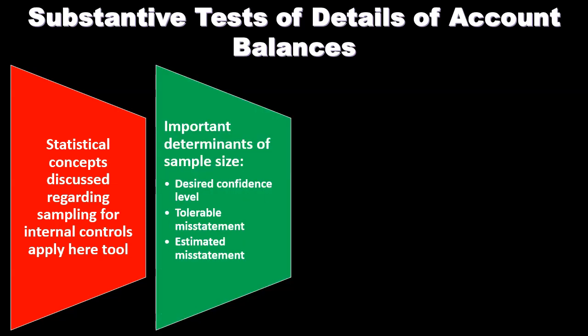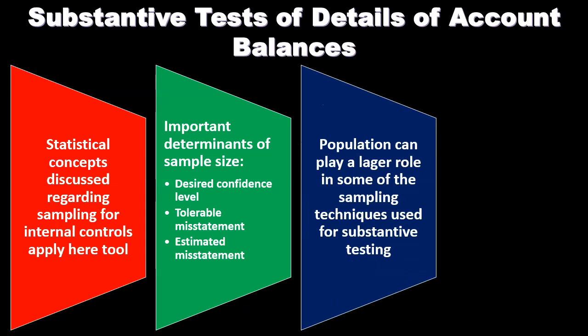This is where the bulk of the work typically will be. For the important determination of sample size, we want the desired confidence level — what confidence level do we want to have? We need the tolerable misstatement — how much misstatement is tolerable? We are looking for material misstatements, so we need to think about what a tolerable misstatement would be. Then we want the estimated misstatement — what do we think the estimated misstatement will be?